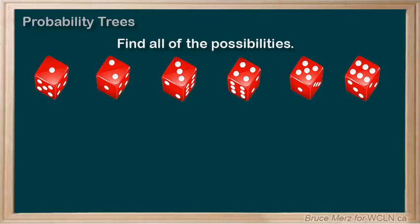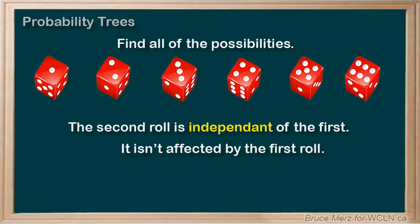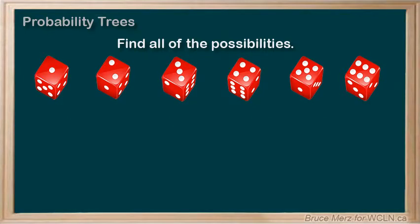And now let's deal with the second roll. No matter what our first roll was, the second roll is independent of those, as in it isn't affected by the first roll. And so once again, the second dice roll could still have six different possibilities, namely one, two, three, four, five, or six.